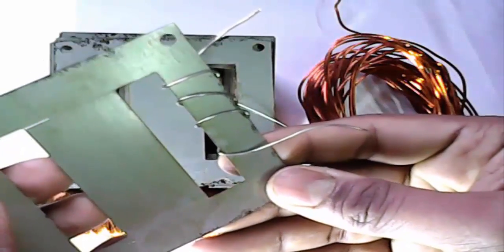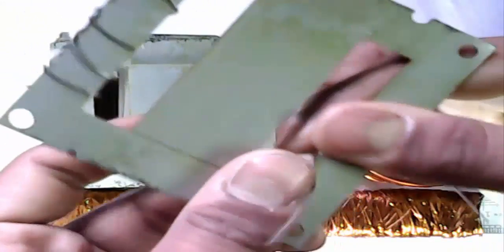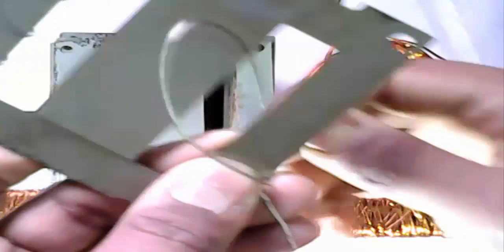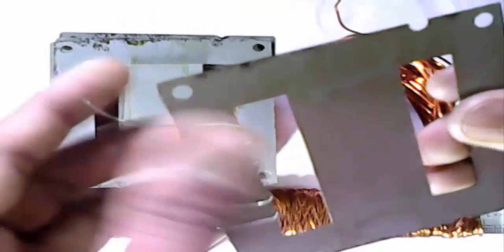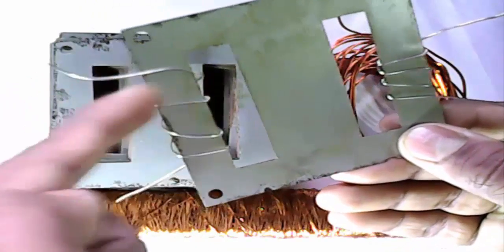See, this is iron sheet. Now other iron. Wrapping perfectly. See, this is wrapping system.